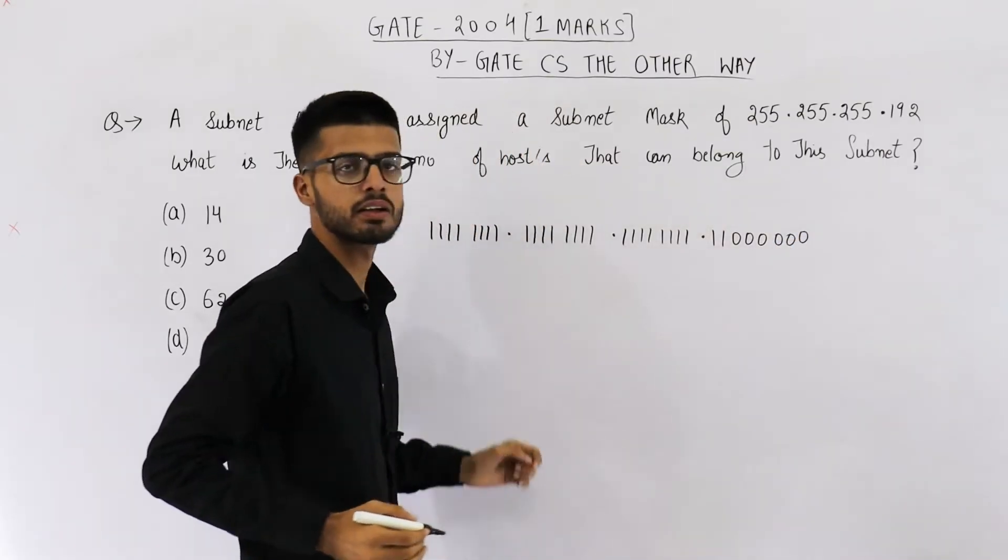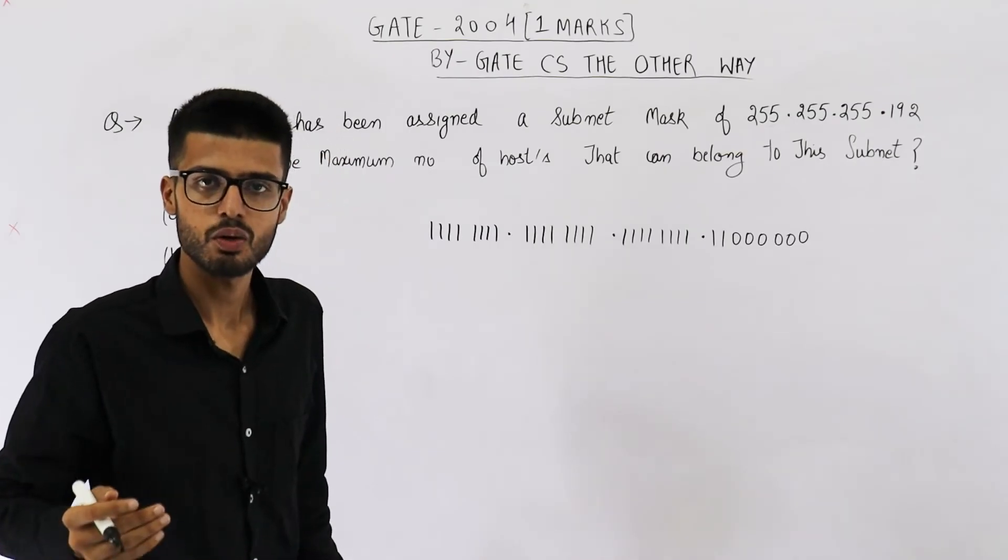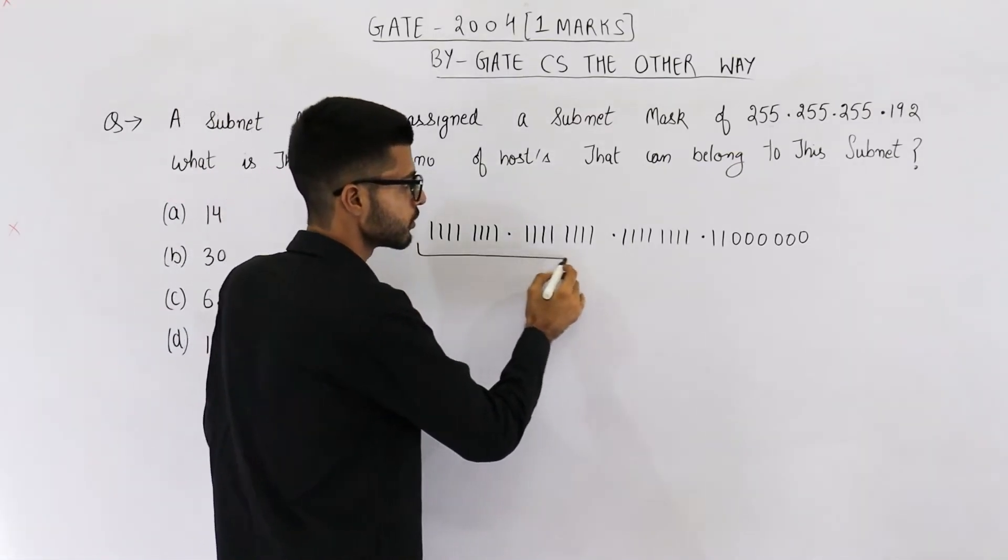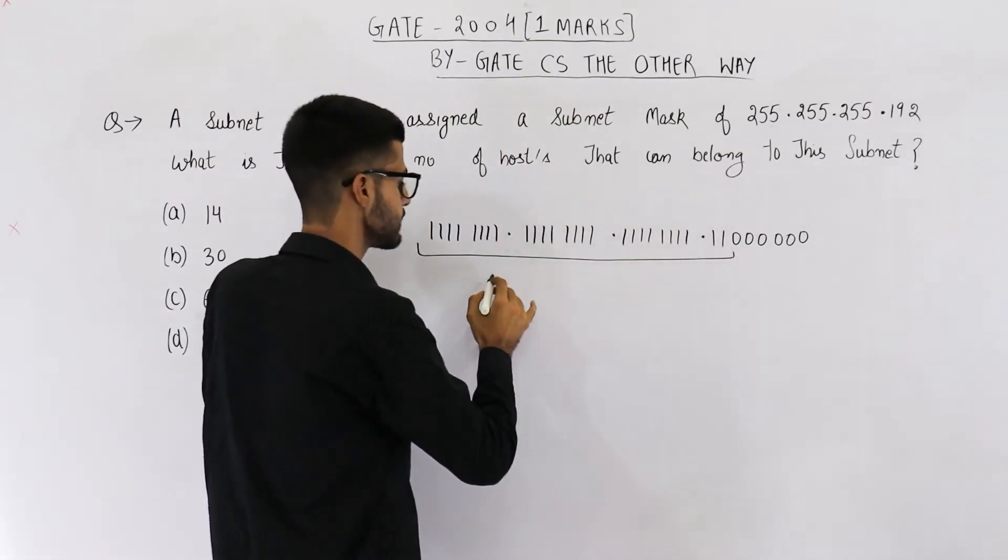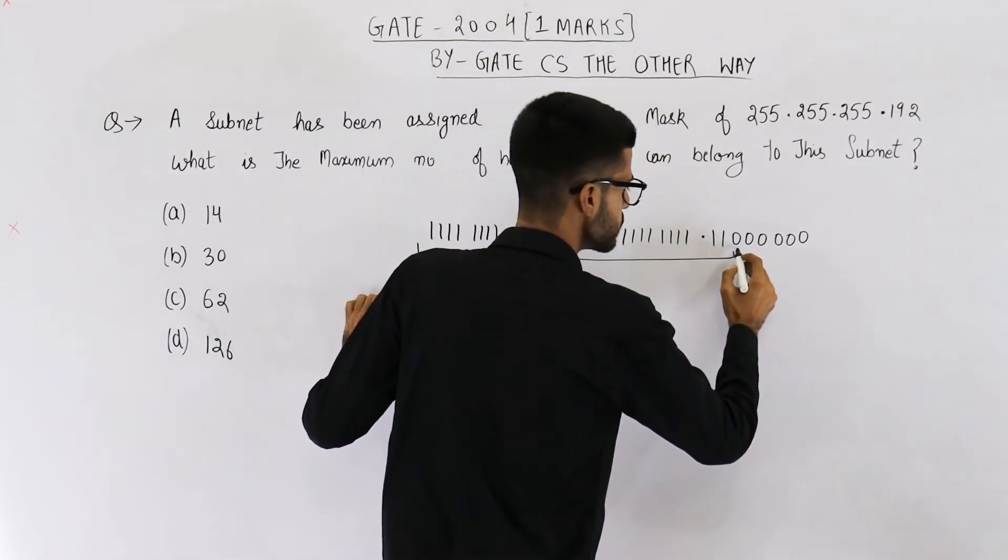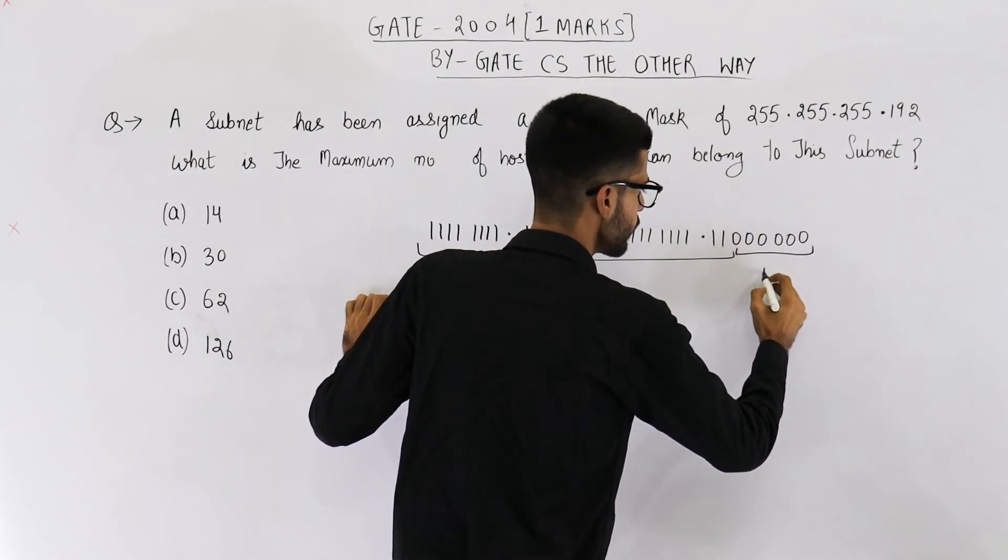Now, you very well know, in subnet mask, 1s indicate the network ID part. So, all of these bits are for network ID. And these bits, all the 0s, they are for host ID.